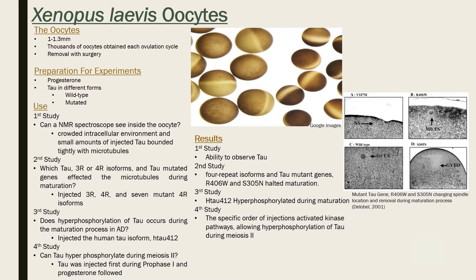The second study focused on FTDP-17 disease. They tested their hypothesis of which tau isoforms in the tau mutant gene had the greatest effect on microtubule function. Four-repeat tau isoforms in high concentrations halted maturation, specifically at prophase I. Two of the seven tau mutant genes also affected the maturation process more than the four-repeat isoform.